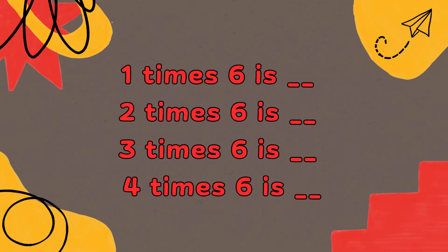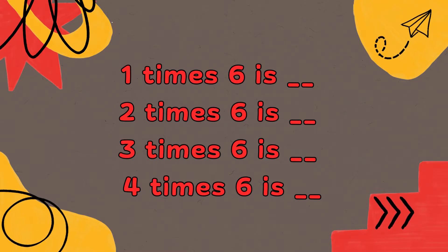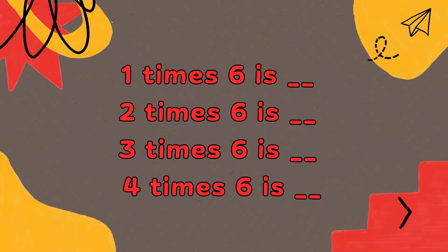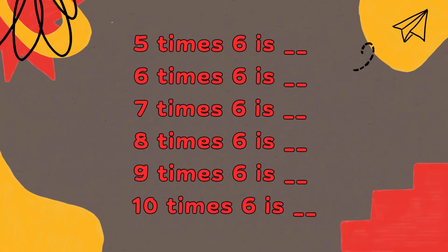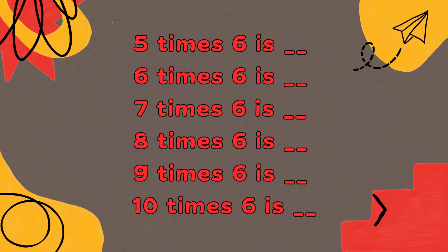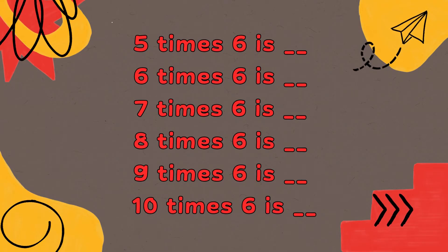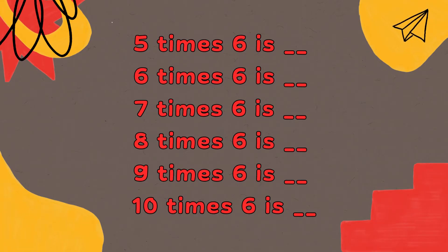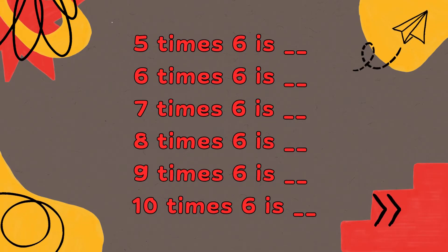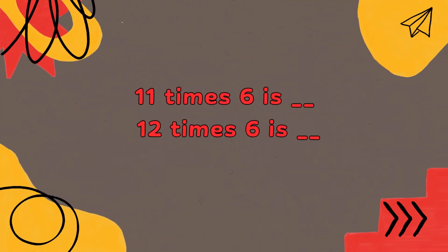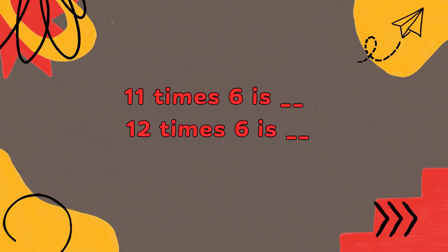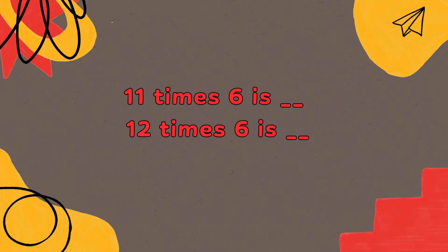1 x 6 is 6, 2 x 6 is 12, 3 x 6 is 18, 4 x 6 is 24, 5 x 6 is 30, 6 x 6 is 36, 7 x 6 is 42, 8 x 6 is 48, 9 x 6 is 54, 10 x 6 is 60, 11 x 6 is 66, 12 x 6 is 72.